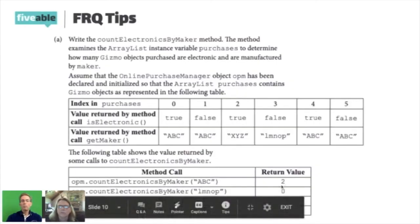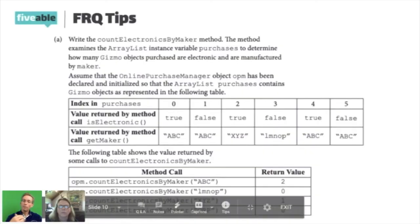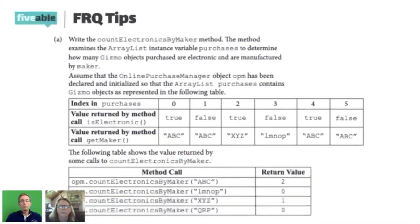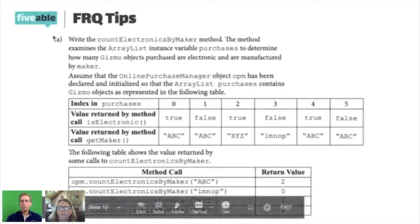Especially for English language learners, get them used to abstracting the types and the methods, and where there are associated fields, make sure they understand those fields. In some cases they have to read the constructors. If they do that, then when they read the text I think it will make much more sense — and oftentimes they don't even have to read the text, because the code itself is descriptive enough for them to finish the problem.